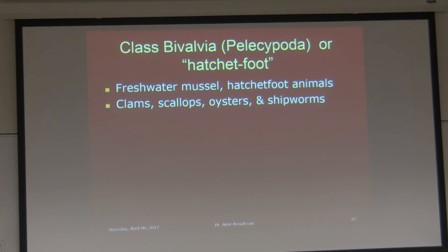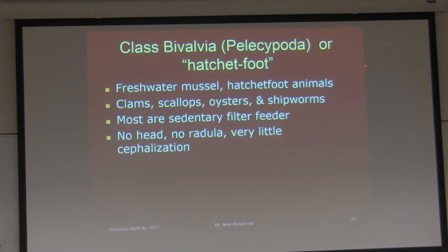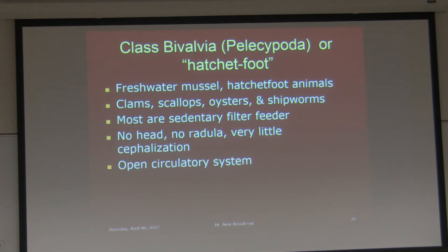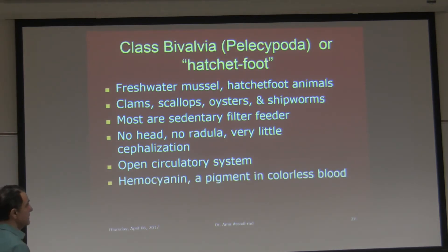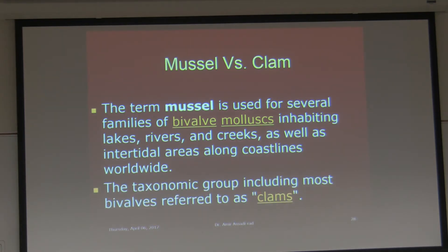We do have bivalves in the lab. Most are sedentary filter feeders. No head, no radula, and very little cephalization. Open circulatory system. Hemocyanin is the pigment — colorless blood. Nephridia are near the heart. One semester a student asked the difference between mussels and clams; we looked it up and found there is not much difference between them — they are essentially the same thing.